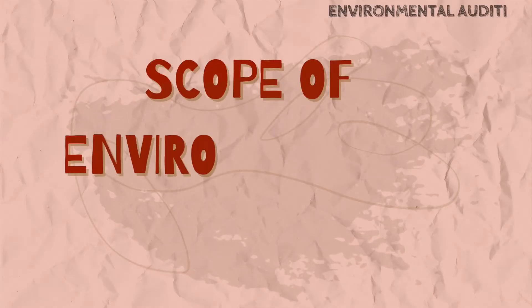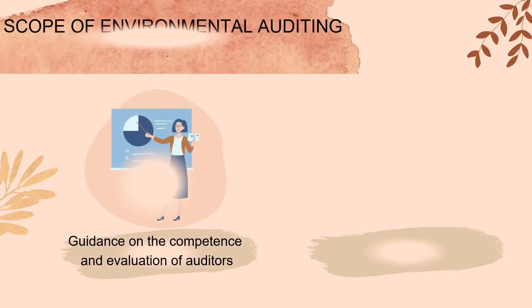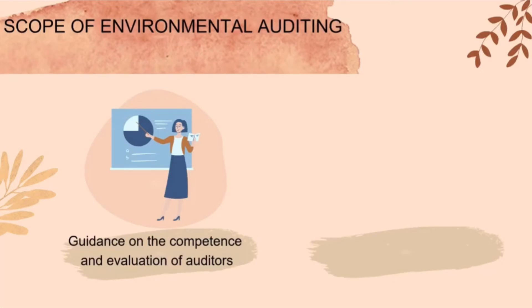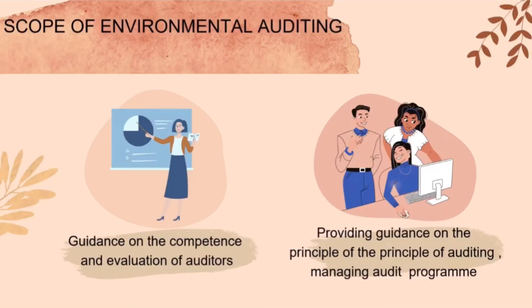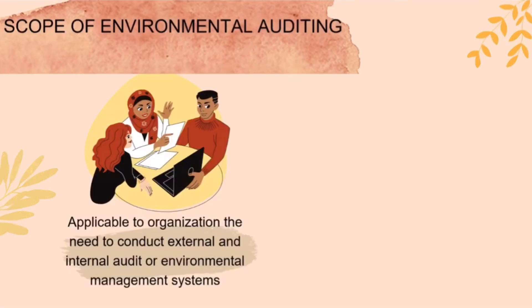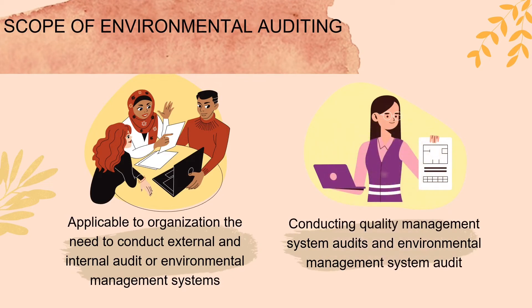We will now move on to the scope of environmental auditing. There are four scopes. First, as guidance on the competence and evaluation of auditors. Second, providing guidance on the principles of auditing and managing audit programs. Third, applicable to organizations that need to conduct external and internal audits of environmental management systems. Fourth, to conduct quality management system audits and environmental management system audits.